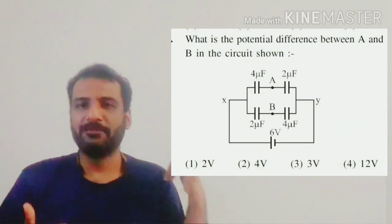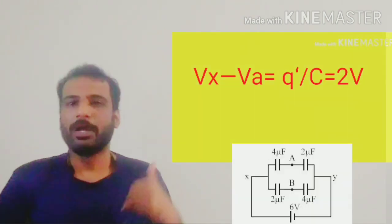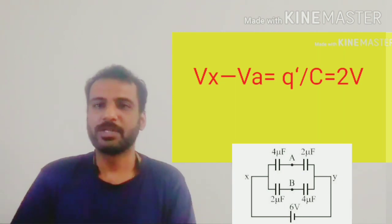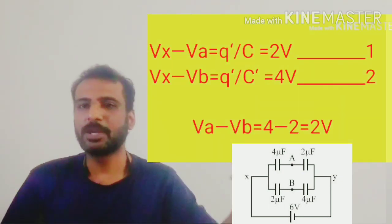Now how do we find the potential difference? VX minus VA is equal to Q by C. So which is 8 by 4 which is equal to 2.